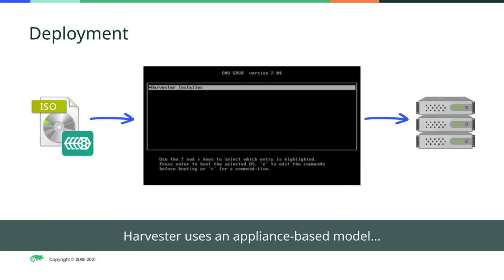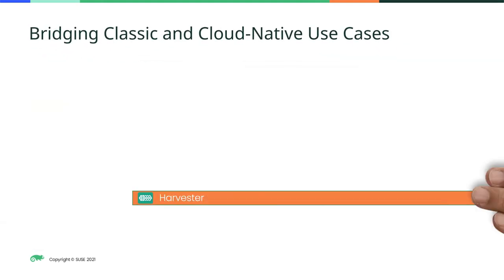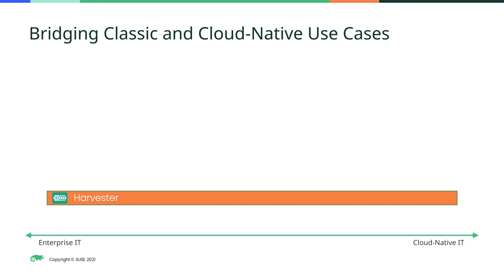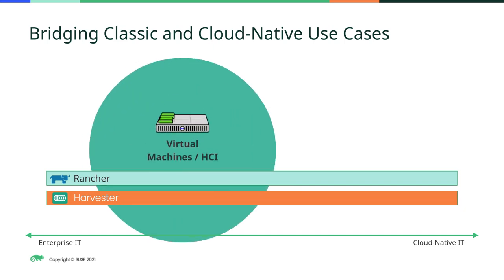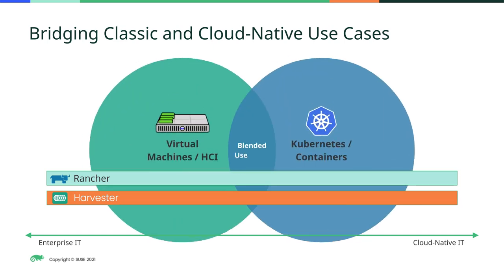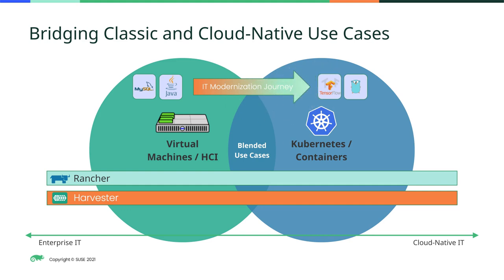Harvester boots up into a specific node, and as that node joins the Harvester management system, it can be administered through the Harvester management console. When used by itself, Harvester provides enterprise teams with an easy-to-use management console that consolidates their day-to-day operations for their virtual machine environments. When combined with SUSE Rancher, Harvester provides operators with a unified platform for both virtual machine workloads and container workloads, and as such, it's able to bring traditional IT apps into the cloud-native world as part of the IT modernization journey.